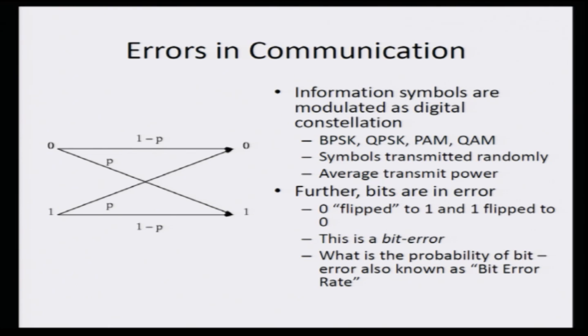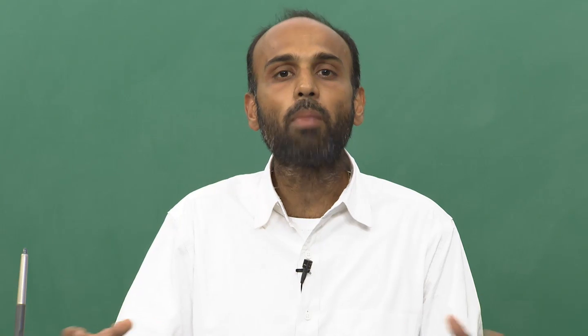Let us look at another example of a typical digital communications — not necessarily only a wireless communication system, but any digital communication system. In a digital communication system, the information symbols, that is the 0s and 1s, are modulated as belonging to a digital constellation such as BPSK (binary phase shift keying), QPSK, PAM, or QAM (Quadrature Amplitude Modulation), and these symbols are transmitted randomly. Therefore, we would like to know what is the average transmit power, and hence one needs the concepts of probability to characterize the average power.